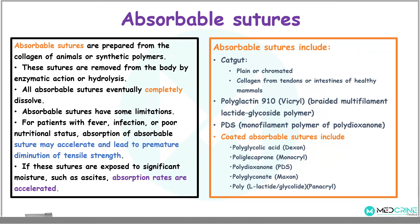Absorbable sutures are a type of suture prepared from collagen of animals or synthetic polymers, and they are removed from the body by an enzymatic reaction or hydrolysis. All absorbable sutures eventually completely dissolve. Absorbable sutures have some limitations; for example, for patients with fever, infection, or poor nutritional status, absorption may accelerate and may lead to premature diminution of tensile strength.